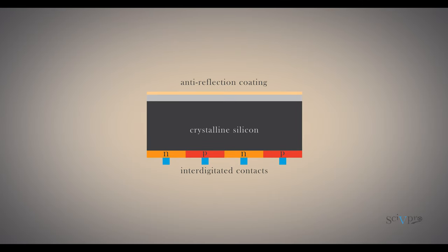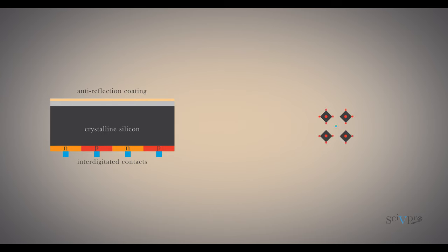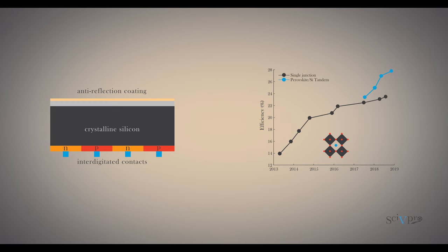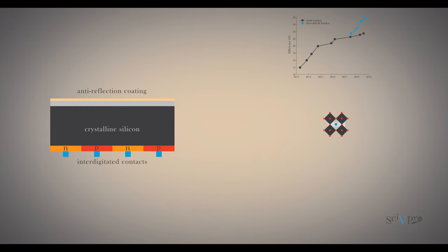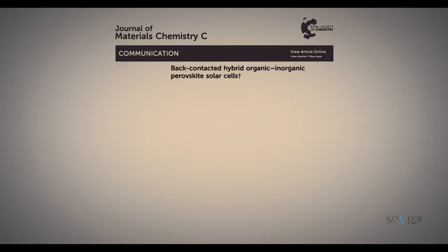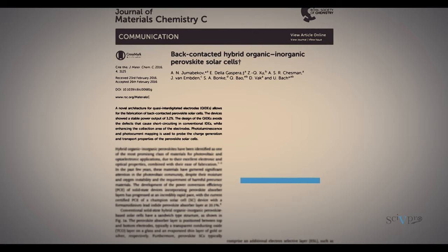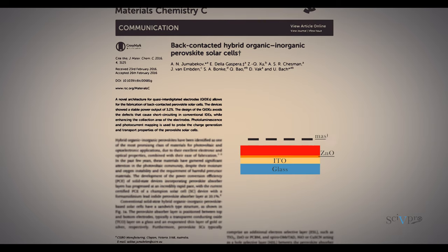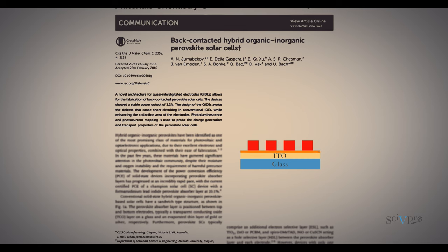Interdigitated back contact or IBC architectures are the best performing technology in silicon solar cells. Although perovskite solar cell efficiencies have now surpassed mainstream silicon efficiencies, most of the research has mainly focused on planar heterojunction structures. The number of studies involving IBC devices is still limited and the proposed architectures are unfeasible for large-scale manufacturing.